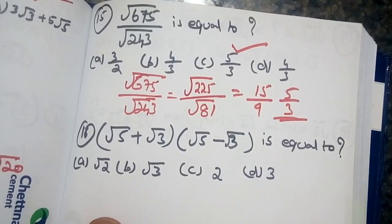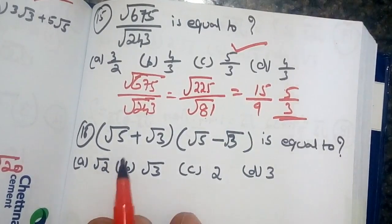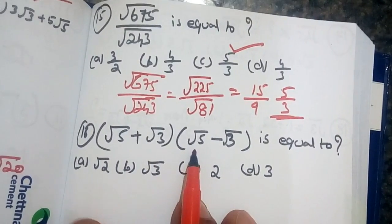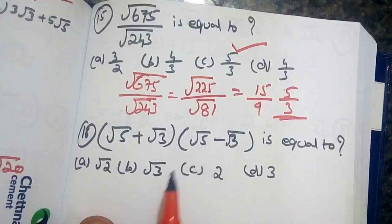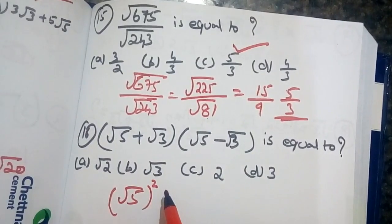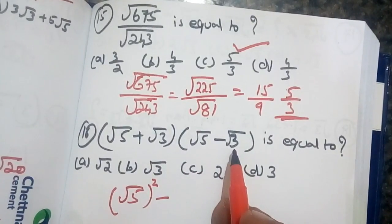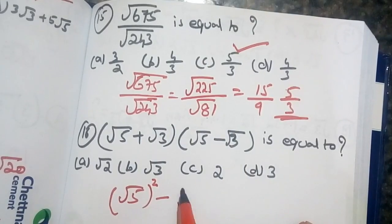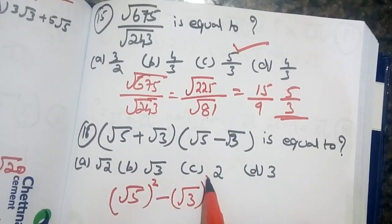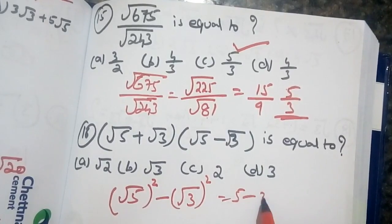Root 675 divided by root 243 equals 5 by 3. Now using the identity: root 5 plus root 3 into root 5 minus root 3. Root 5 minus root 1 — let's check this block.